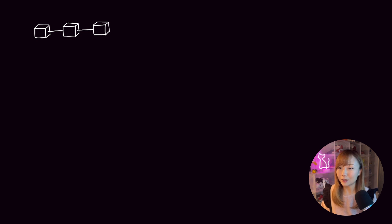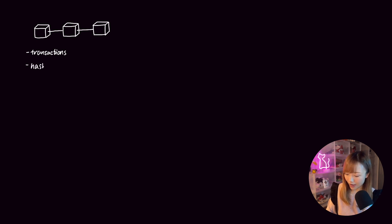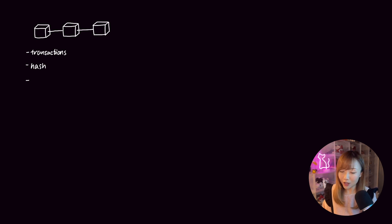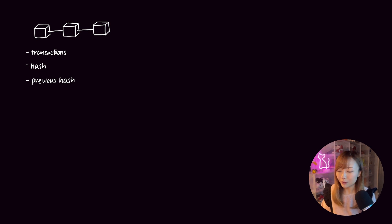Conceptually, a blockchain is basically a bunch of blocks in the chain. Each block would contain information such as the transactions and some kind of unique identifier for this block, what we call a hash or a hash value, which is basically like a unique value. And it may contain other information such as a reference to the previous block, like the previous block's hash.